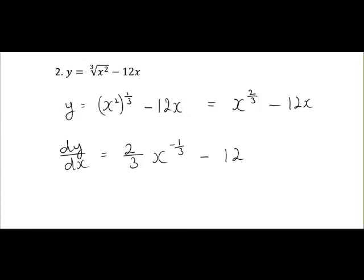You may leave it at this point if you wish, but if you want to tidy it up fully, we will do that next. So what we have is 2 over 3 times x to the power of minus a third, which is the same as 1 over x to the power of a third. When you move below the line, the sign of the power changes. Minus 12.